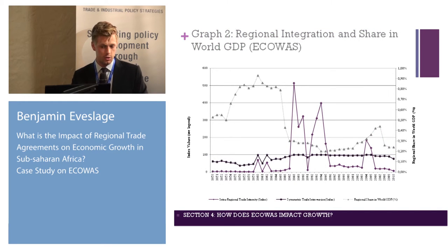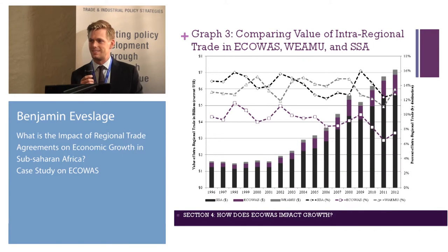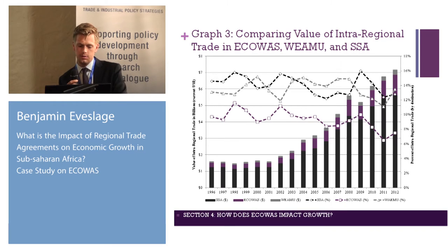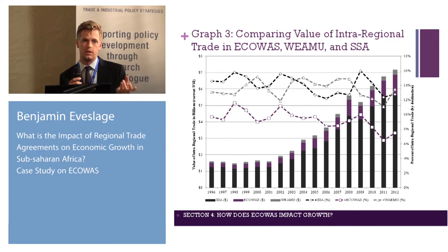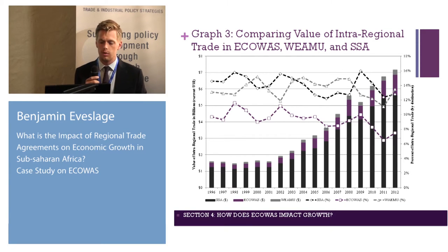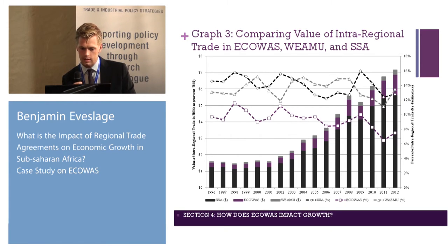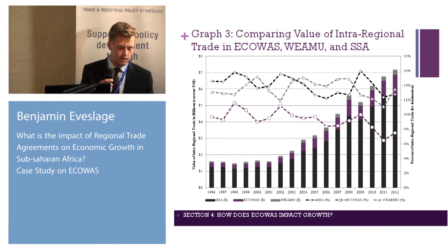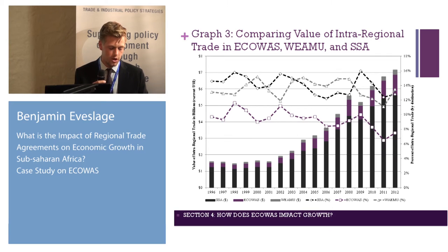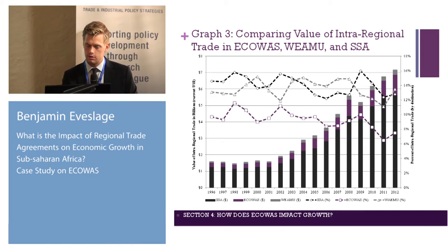Graph two I'm not going to review because I'm still questioning how to interpret it — perhaps I can get some help on that in questions. Graph three shows the absolute value of inter-regional trade. Sub-Saharan Africa is in the darkest block at the bottom, with ECOWAS on top of that, and WAEMU — which is a part of ECOWAS — on top of that. Focusing on ECOWAS in purple, the absolute value of inter-ECOWAS trade has increased substantially in the 2000s. However, the percentage shown by the purple dashed line indicates that the share of inter-regional ECOWAS trade has decreased slightly over the past 20 years, showing that ECOWAS has not substantially facilitated regional trade.